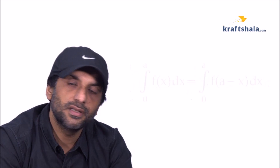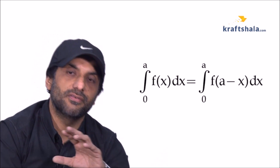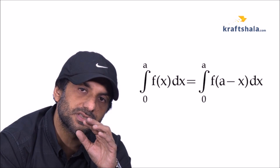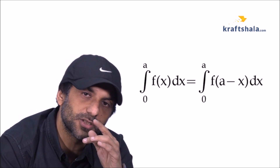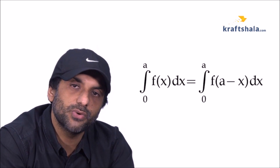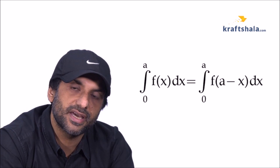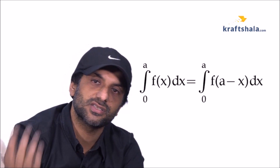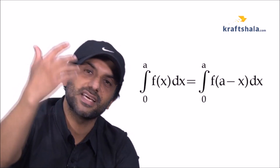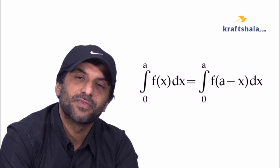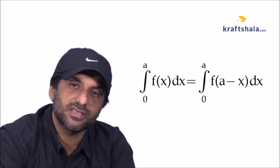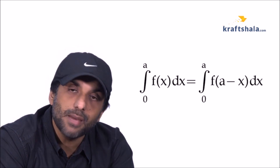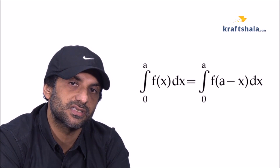The fifth property is actually derived from the fourth property. When the lower limit is 0 instead of a, the integral from 0 to a of f(x) dx can be written as the integral from 0 to a of f(a − x) dx.